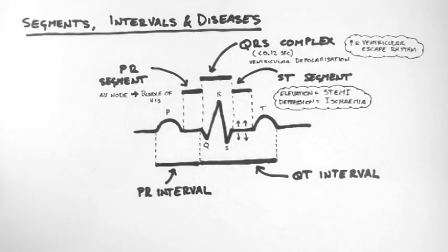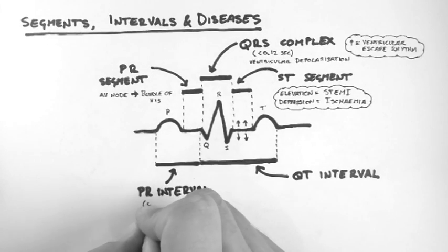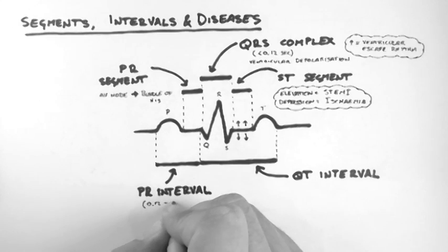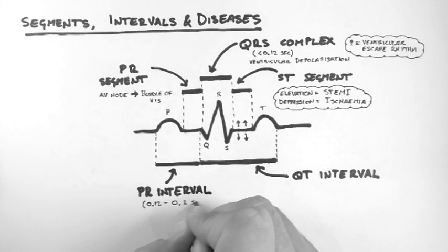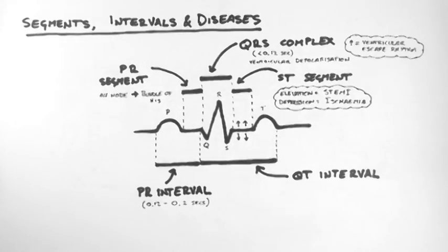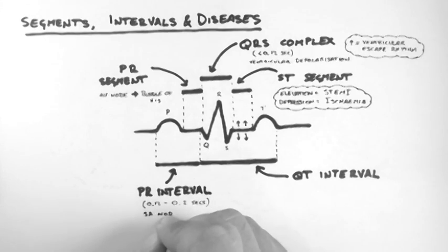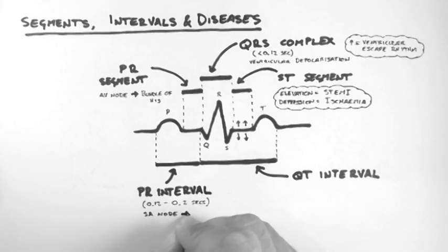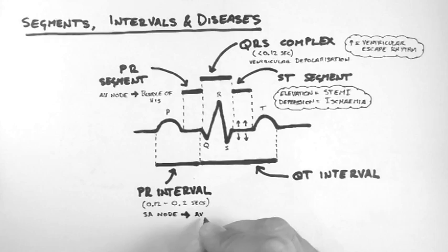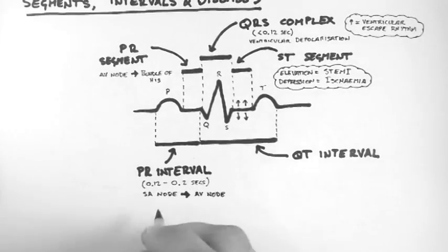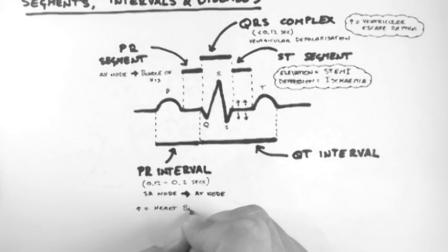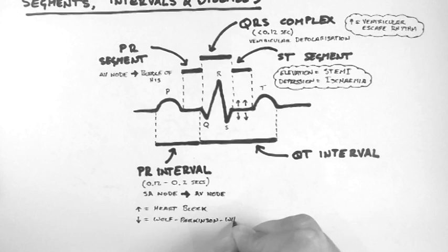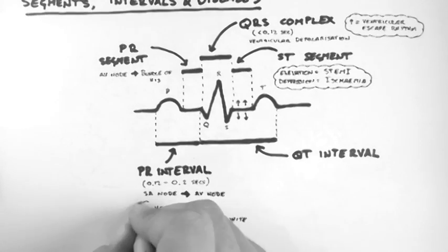Now the PR interval should be between 0.12 and 0.2 seconds long. It corresponds to the wave of depolarization travelling from the SA node to the AV node. An increase in length could be the result of a heart block. A decrease in length could suggest Wolff-Parkinson-White syndrome.